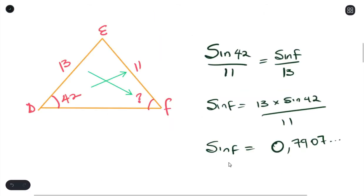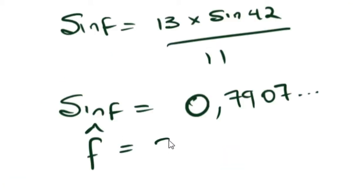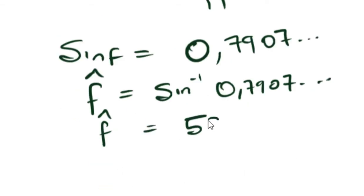And that would be your answer for sin F. But that's not what we're asked to find. We're asked to find angle F. So to get angle F, we will use the second function of sine. Meaning we'll move sine over to the other side. And in your calculator, you put shift sine. Then you substitute this answer over there. And your final answer would be... And that's it. 52.26 degrees.